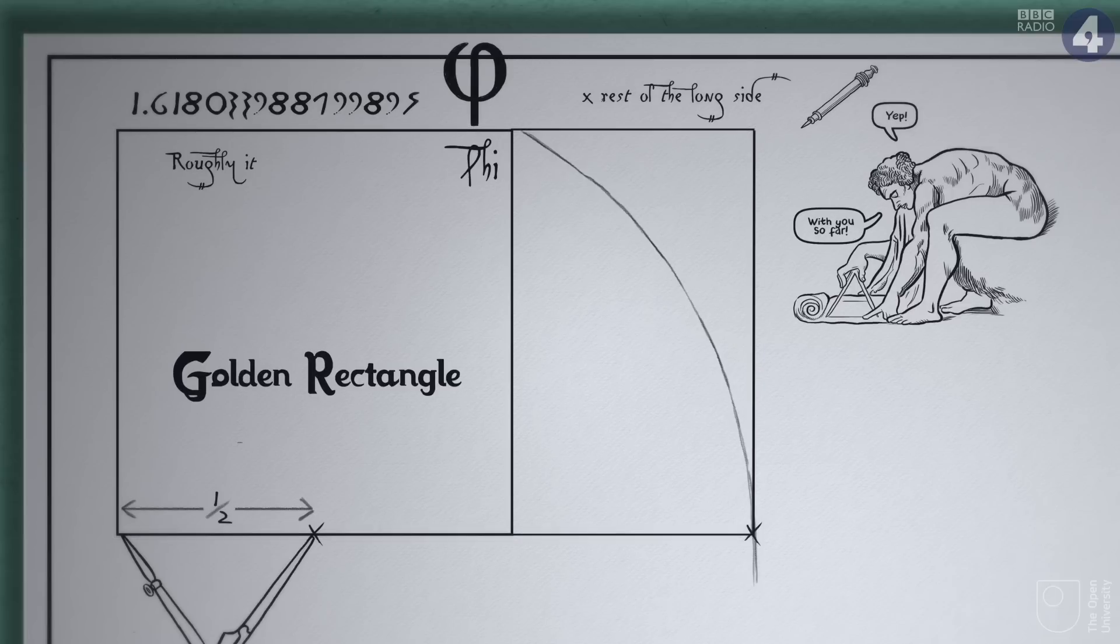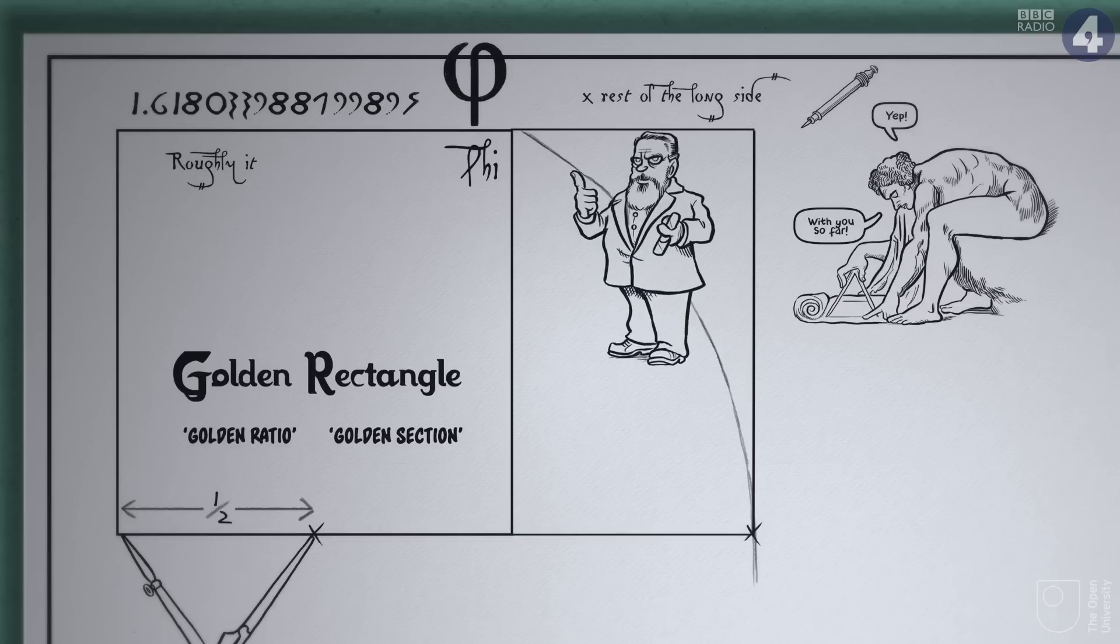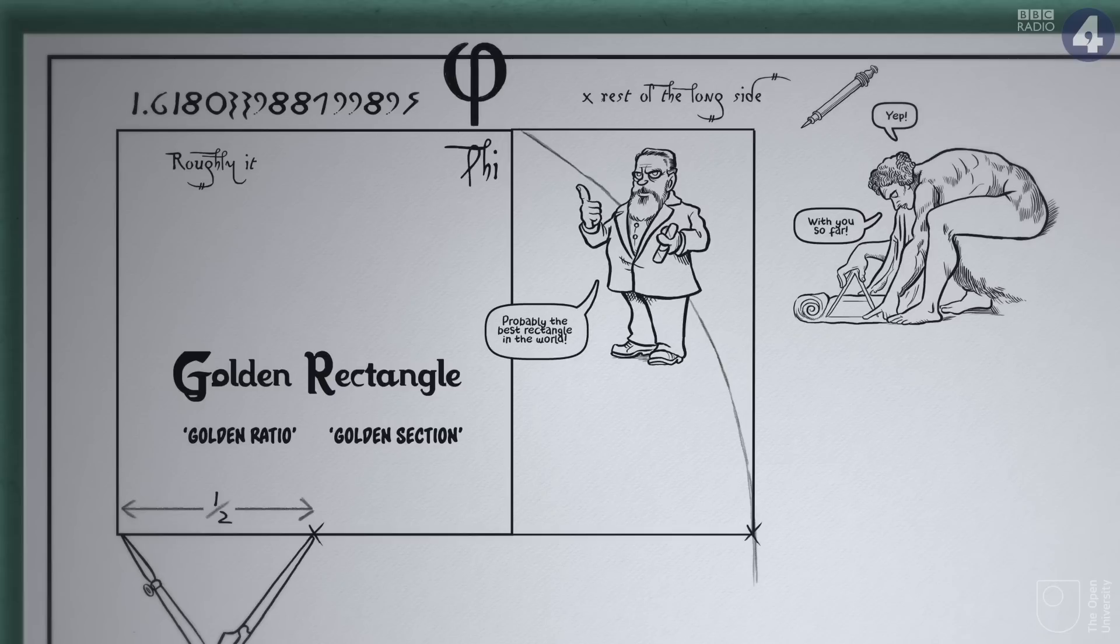The proportions known usually as the golden ratio or golden section are particularly pleasing, beautiful even. The ratio has satisfying properties.